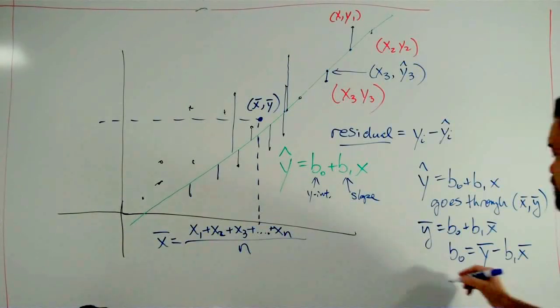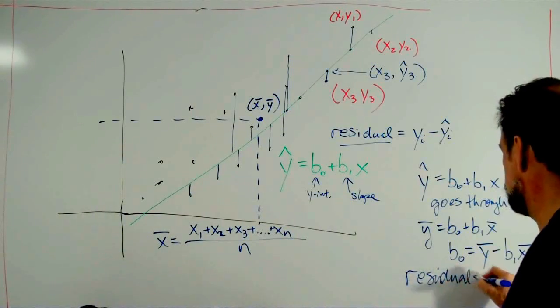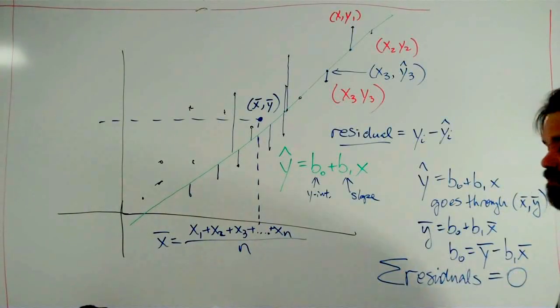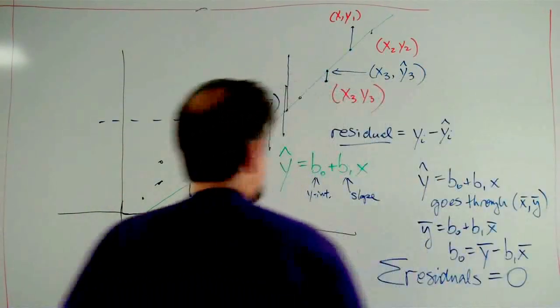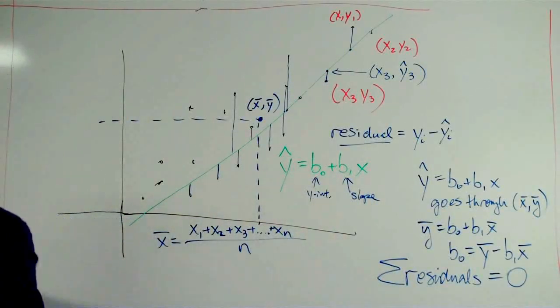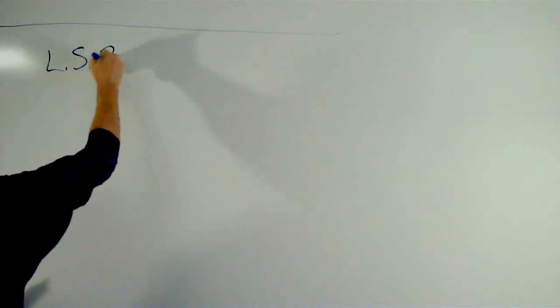We also know that the residuals, the sum of all the residuals equals zero. And, the best line we could come up with, we refer to as the least squared regression line. So, let me get a new board here.